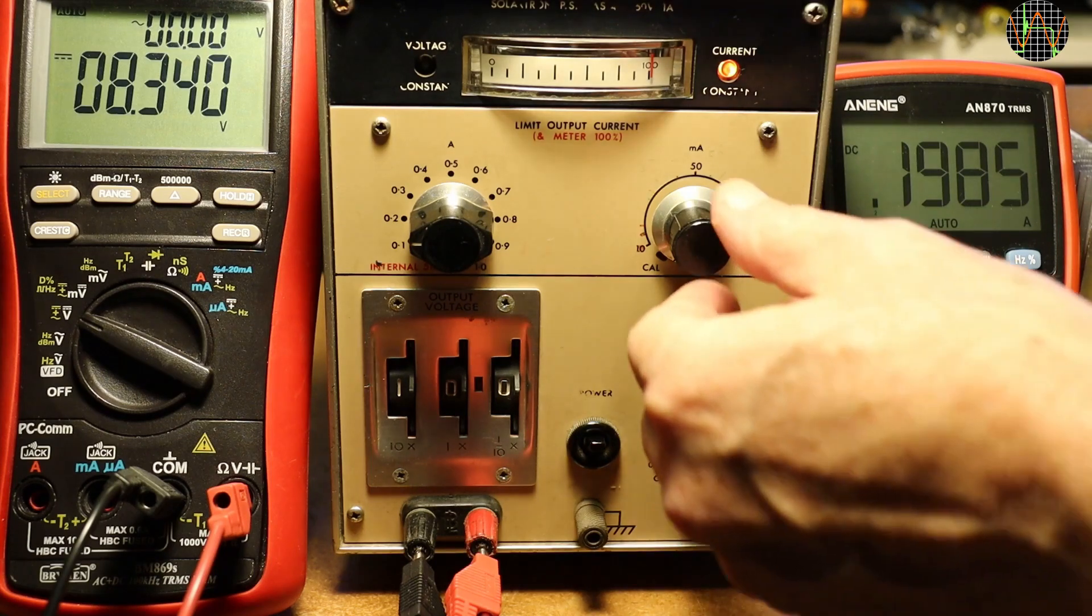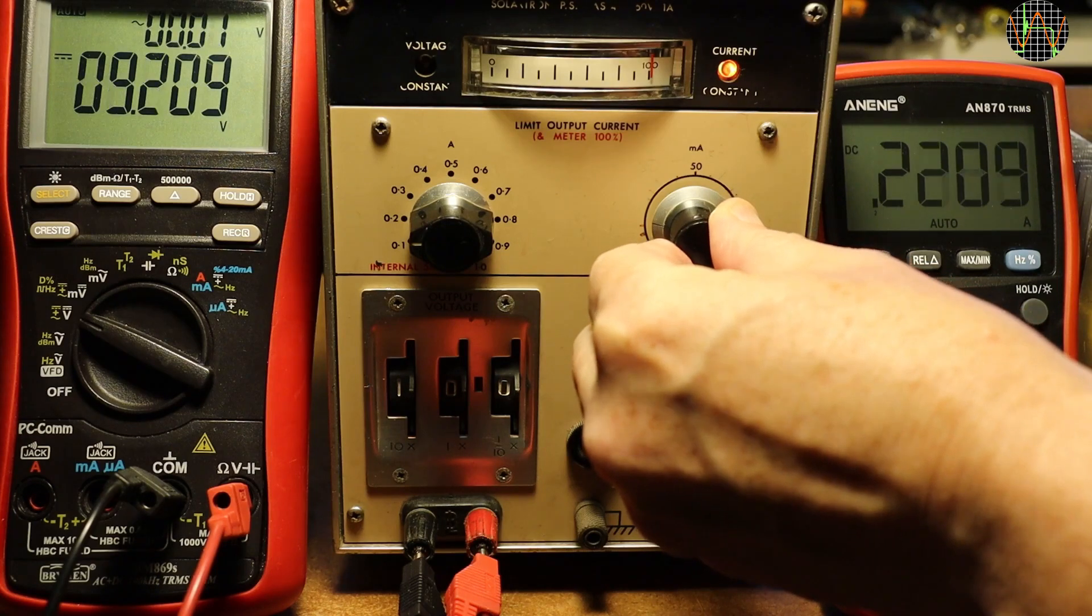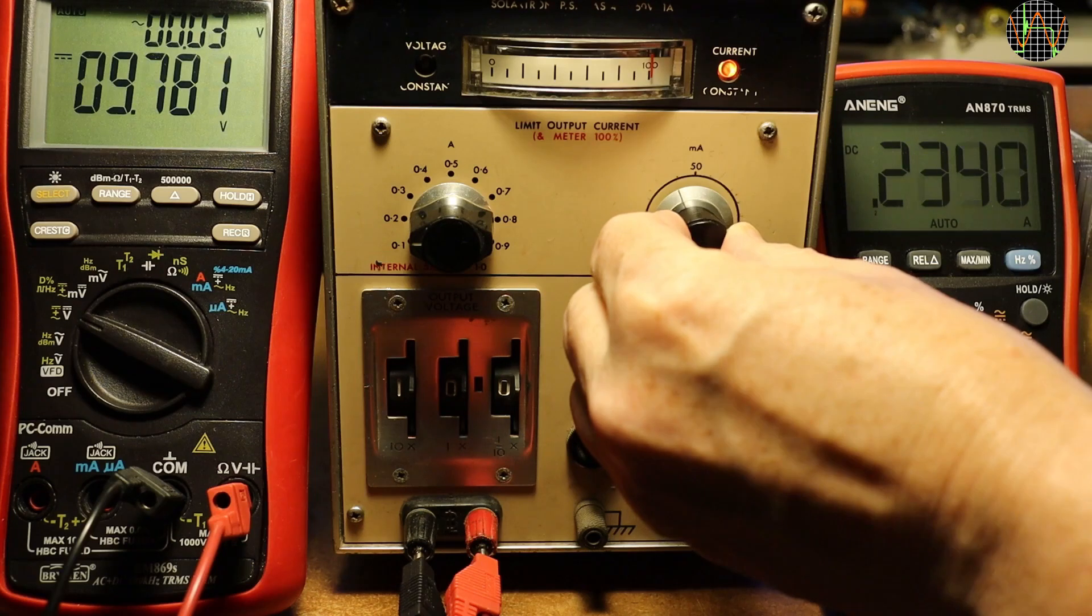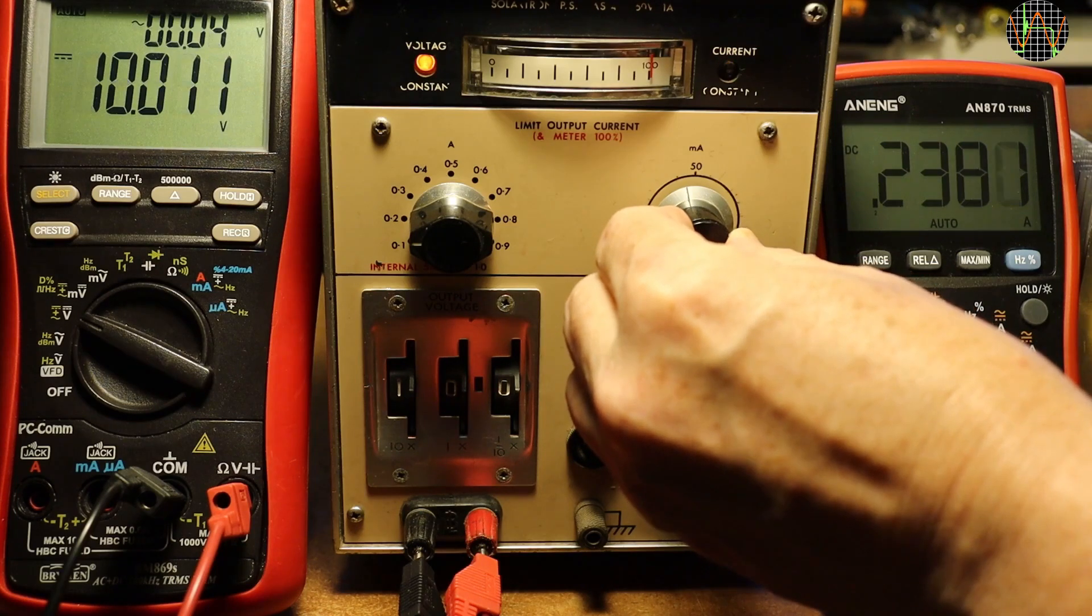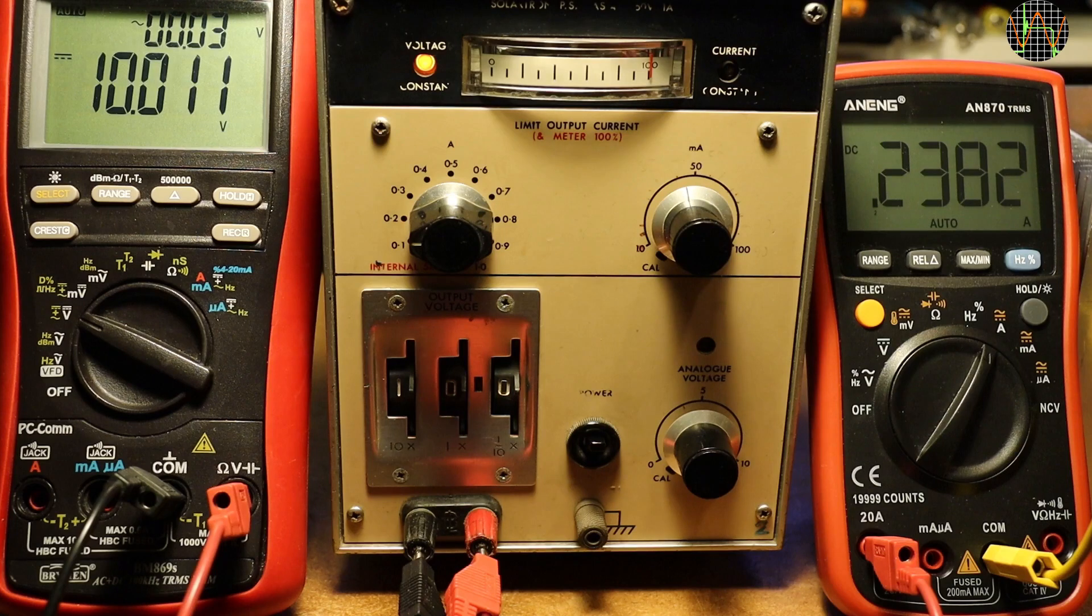If I now use the current pot, I can add up to 100mA more current and since I am in the 200mA setting, sure enough, as soon as I get close to the 50mA mark, the constant voltage light comes back on because the allowed current is now 200mA fixed plus about 40mA from the pot, so 240mA which is slightly more what the load is.